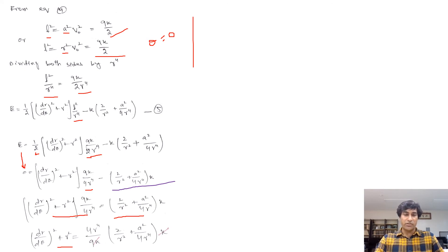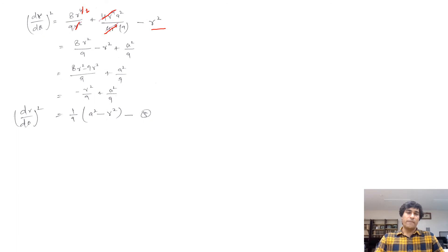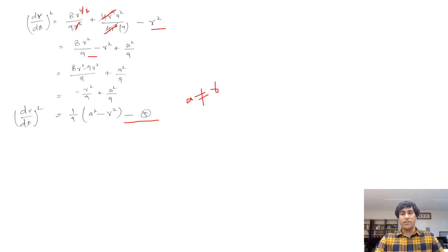After simplification, we can cancel K with K, then move R² from the left hand side to the right with a negative sign. The 4R⁴ in the denominator cancels, and R² terms cancel, leaving (dR/dθ)² = (1/9)(A² − R²). Note that A is not equal to R here; if it were, the left hand side of equation 5 would be zero.